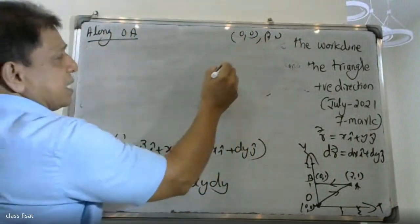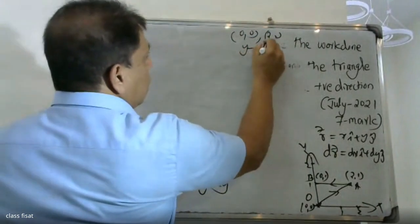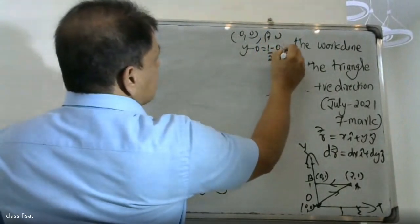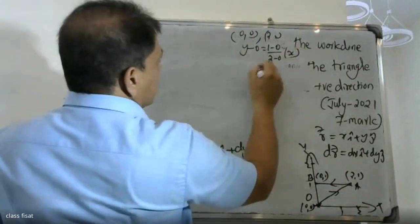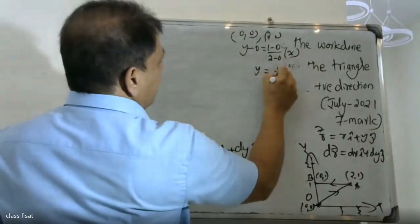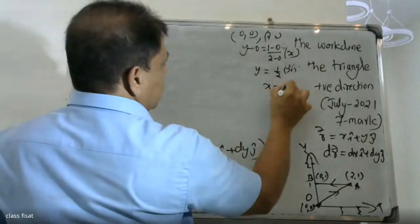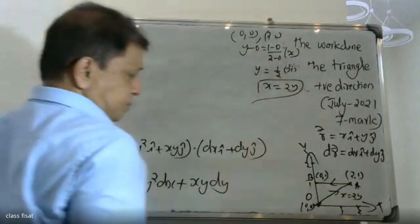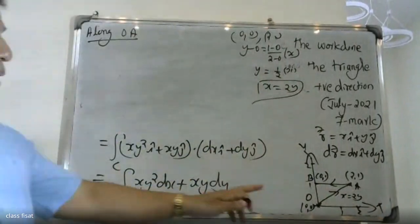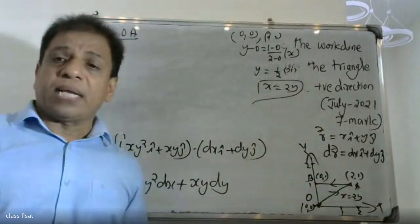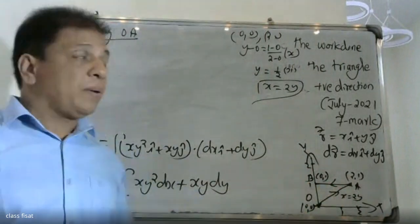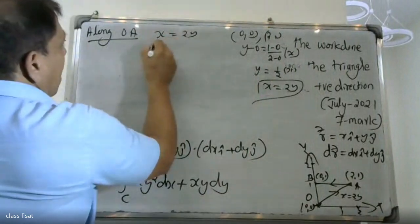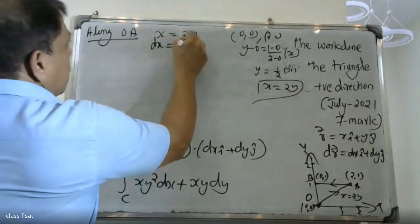For the line from (0,0) to (2,1), using the line equation: y minus y1 equals (y2 minus y1)/(x2 minus x1) times (x minus x1). That gives y equals (1/2)x, so x equals 2y. The line equation is x equals 2y.